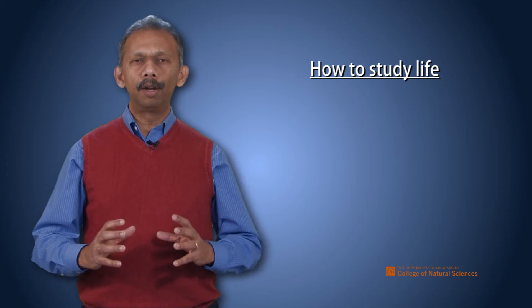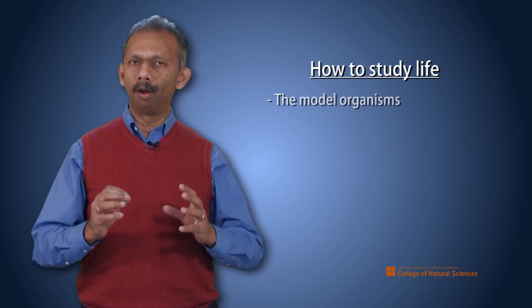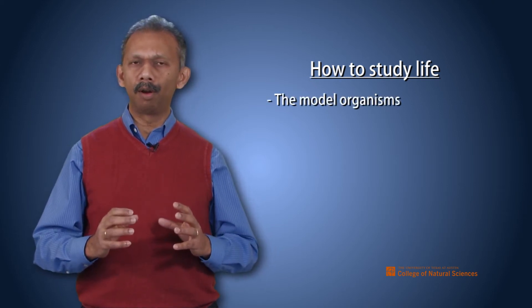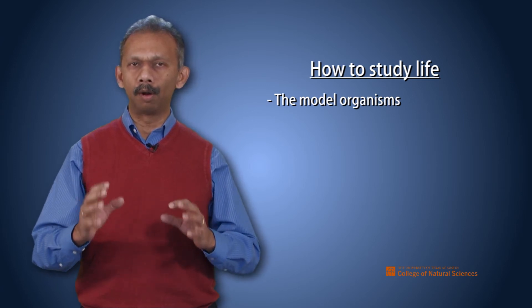The third part of this chapter talks about the experimental methods in biology. There, you would study first the model organisms. What are the model organisms, such as Arabidopsis, or rice, or wheat,